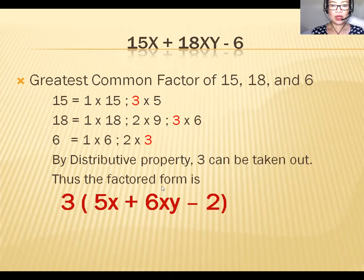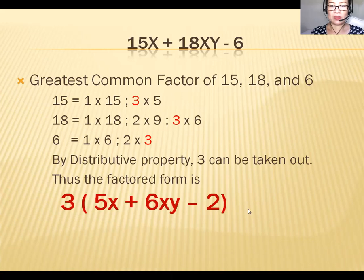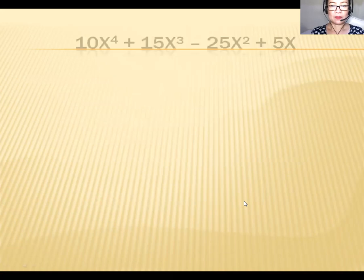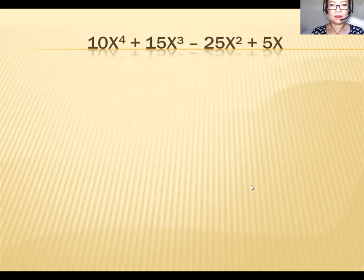So before, the monomial multiplied by the multinomial was given and the expanded form was the answer. Now it's reversed: the expanded expression is given and the factored form is your answer. This is factoring — the reverse of what we studied.